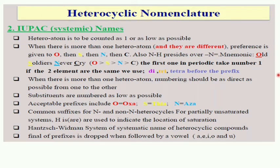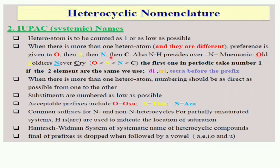In IUPAC nomenclature of heterocyclic compounds, we need to follow systematic guidelines. The heteroatom is to be counted as 1 or as low as possible — always give preference to the heteroatom with the number 1. When there is more than one heteroatom, preference is given first to oxygen, then sulfur, then nitrogen. The priority order O, S, N, C can be remembered with the mnemonic 'old soldiers never cry.'